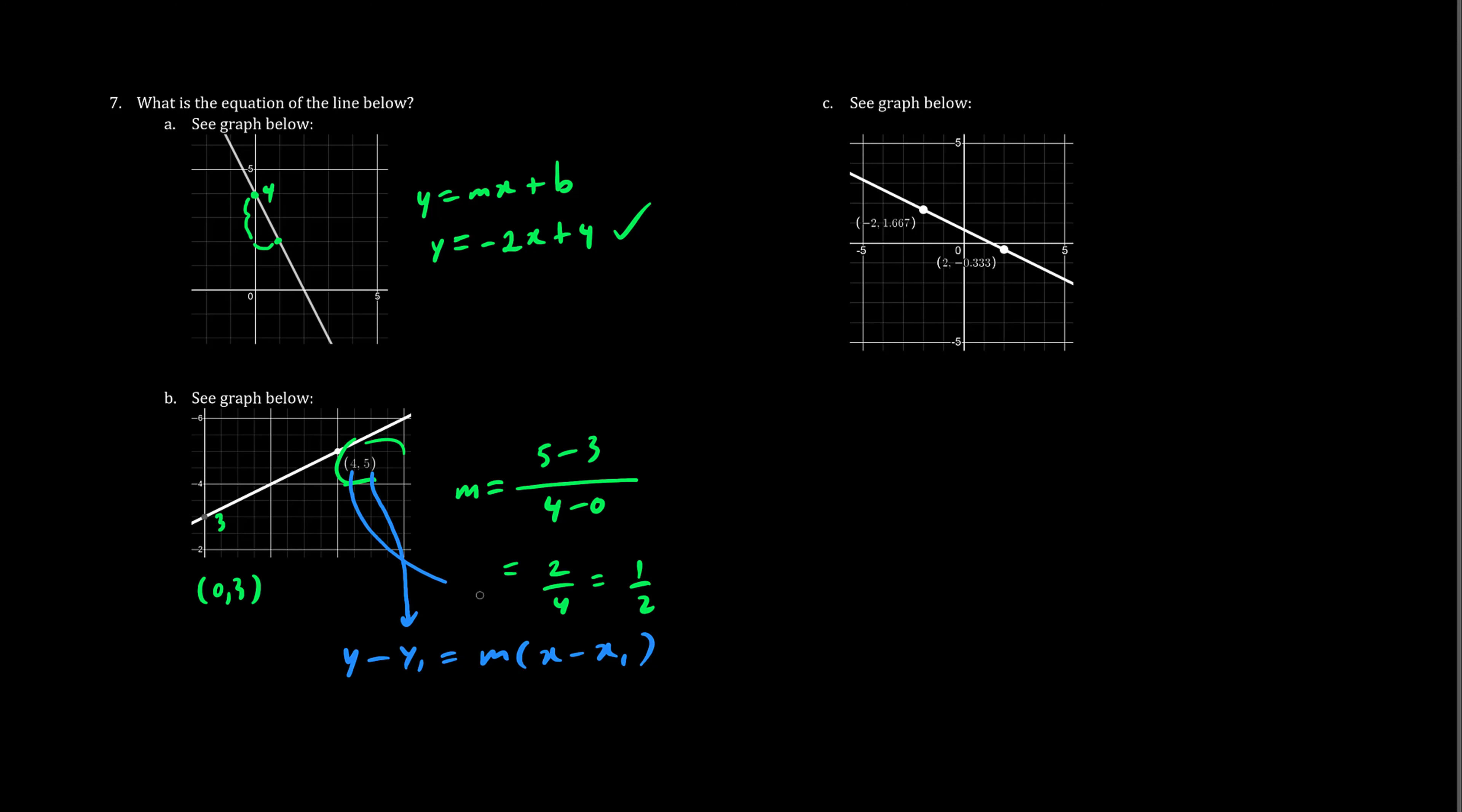So y minus five equals the slope, which is one half, times x minus four. Let's use distribution here. So y equals one half x, negative four times a half is negative two. And this negative five, when you throw it over, becomes a positive five. So five minus two is positive three. So we say the equation is y equals one half x plus three.